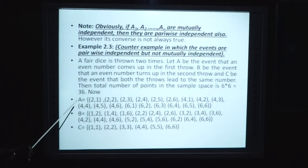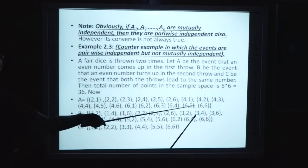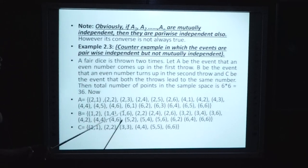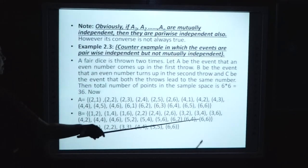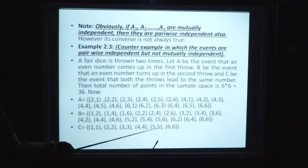Ab isko hum dekhte hain. A mein kya kya sample space hoga? A = {(2,1), (2,2), (2,3), (2,4), (2,5), (2,6), (4,1),...,(6,6)} - even numbers in first throw, 18 outcomes. B ka sample space: {(1,2), (1,4), (1,6), (2,2), (2,4), (2,6),...,(6,6)} - even numbers in second throw, 18 outcomes. And C = {(1,1), (2,2), (3,3), (4,4), (5,5), (6,6)} - both throws same number.